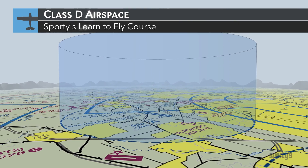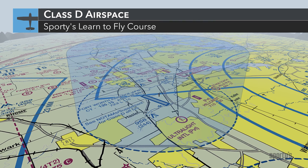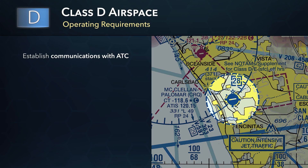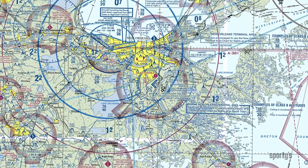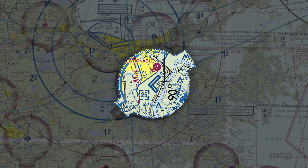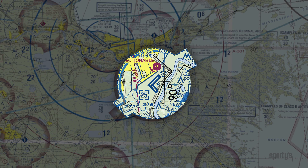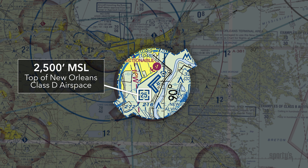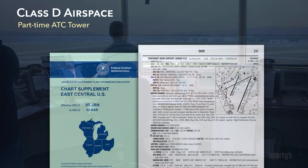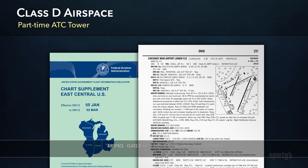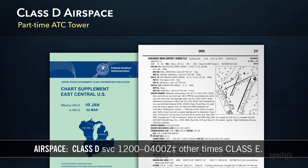Class D airspace surrounds tower-controlled airports that do not have an associated Class B or C area. You must establish two-way radio communications with ATC before operating in Class D airspace, but a clearance is not required. You must possess a minimum of a student pilot certificate. Recreational and sport pilots with a sign-off may also fly in Class D airspace. Class D airspace is depicted on VFR charts with a segmented blue line. Many have arrival extensions, giving the airspace the shape of a keyhole. The vertical boundary is charted inside a blue segmented box in hundreds of feet MSL. The top of this Class D airspace is 2,500 feet MSL. VFR traffic advisories from ATC are provided on a workload permitting basis. Some towers operate part-time, and when the tower is not in operation, Class D airspace reverts to the less restrictive Class E or G airspace.